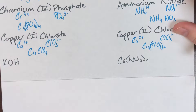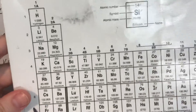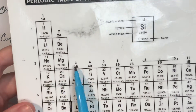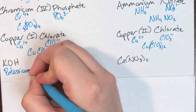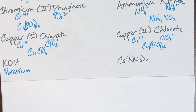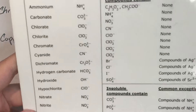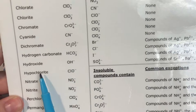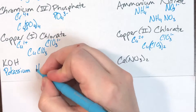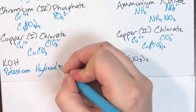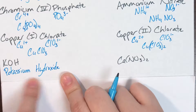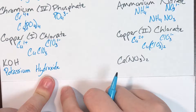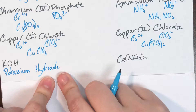Now going from formula to name: KOH. K is potassium, and since it is in the first two columns I don't need to calculate oxidative states. OH on the list of polyatomic ions is hydroxide, which is one of the exceptions that doesn't end in '-ate' or '-ite.' Hydroxide is already the anion name, so the compound name is potassium hydroxide.